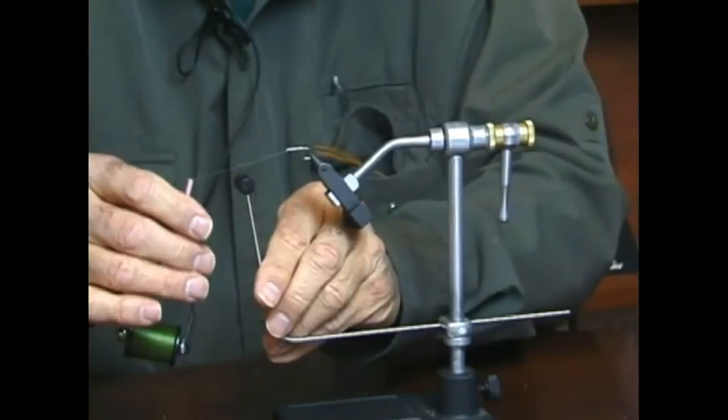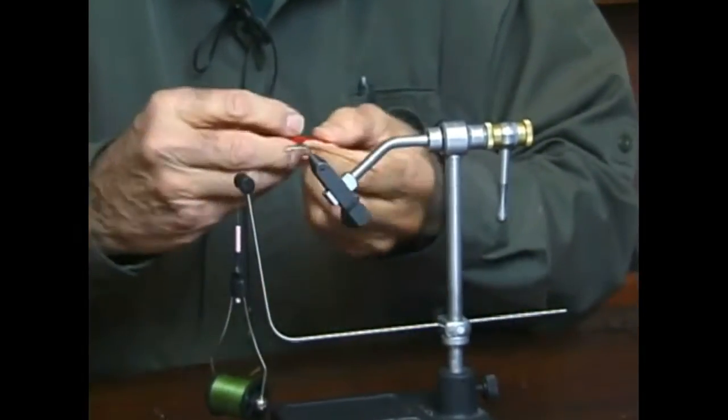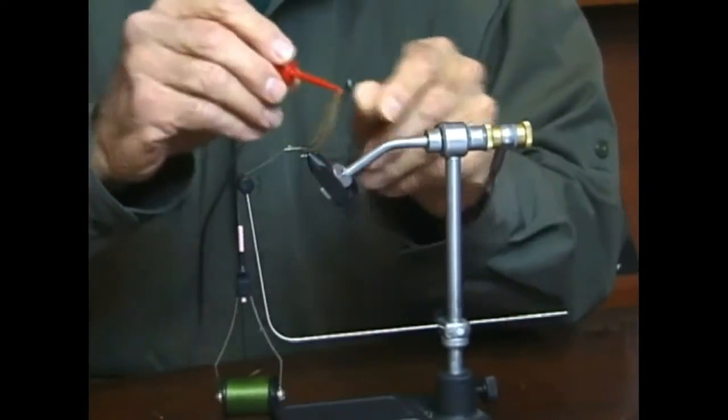I'm going to move the bobbin cradle back in position, lay the bobbin in the bobbin cradle, take my hackle plier, go back and get the furnace saddle hackle.